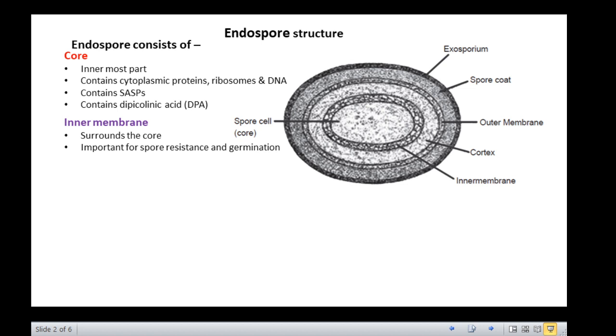Between the inner and outer membrane lies the cortex. The cortex is the thickest layer composed of specifically modified peptidoglycan built around the inner membrane. The cortex is of crucial importance for the maintenance of spore dehydration and thus resistance and dormancy.